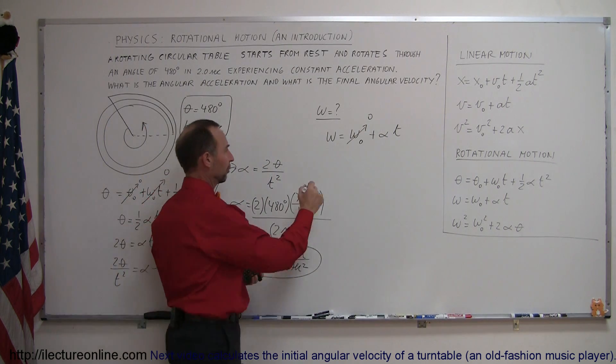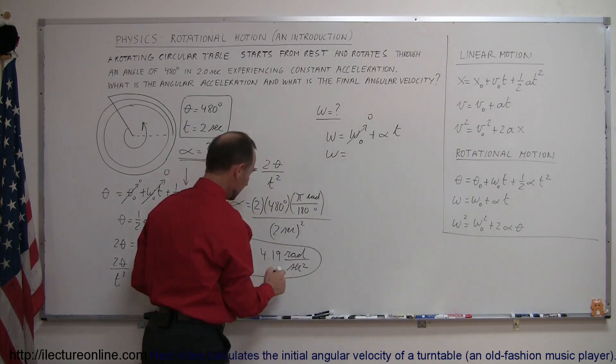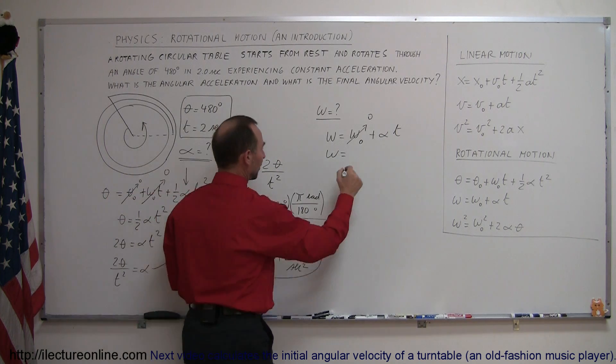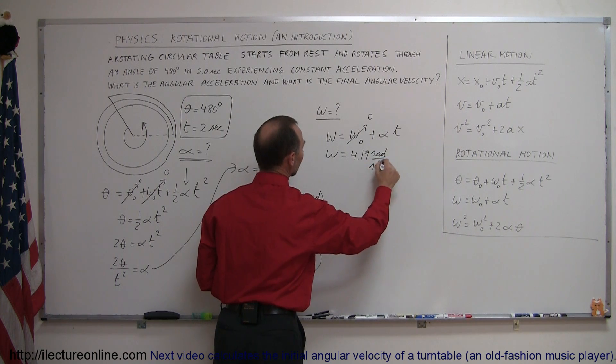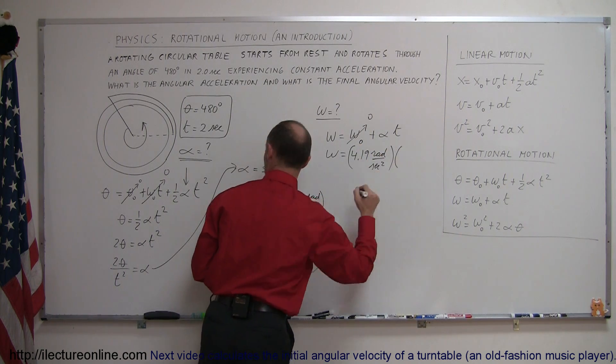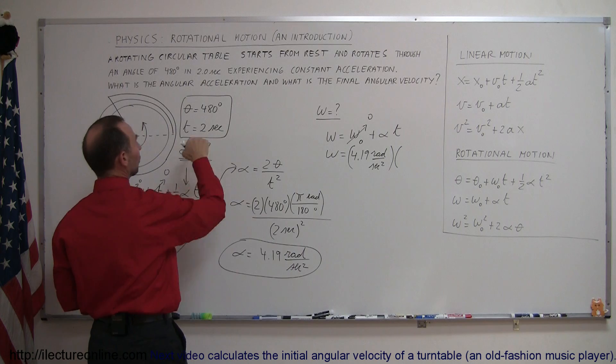because we started from rest. Therefore, omega equals the angular acceleration that we found, 4.19 radians per second squared, multiplied by the time.